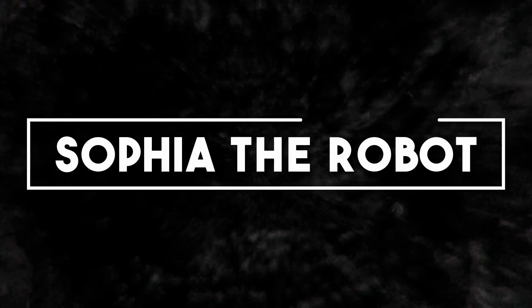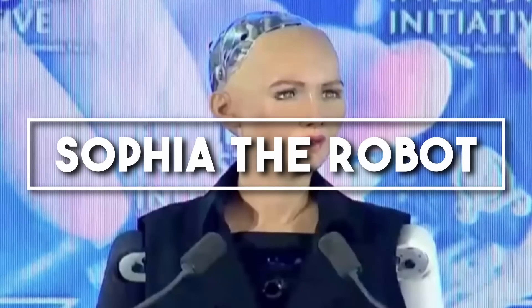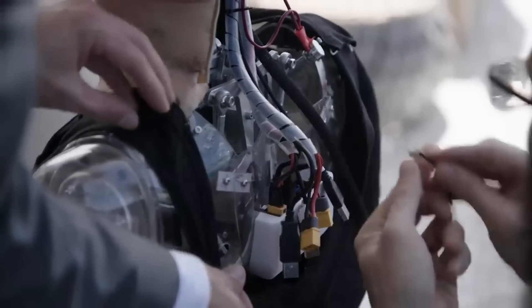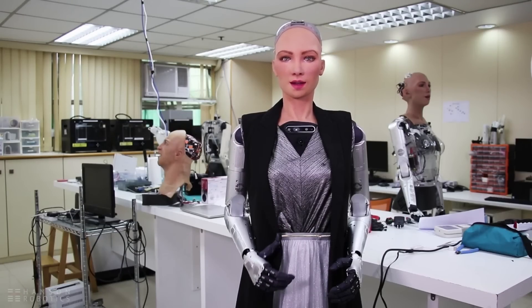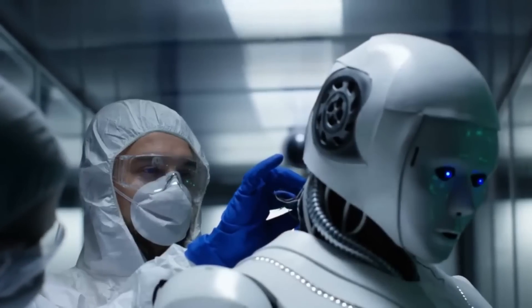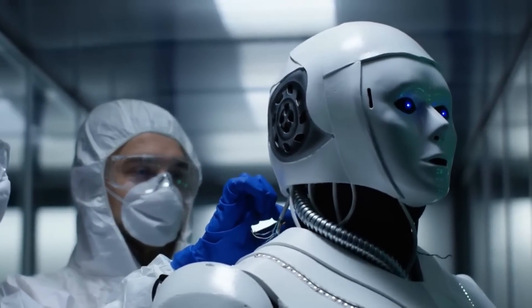Number 9. SOFIA the Robot. SOFIA, a humanoid robot by Hansen Robotics, activated in 2016, represents a significant leap in the field of robotics and artificial intelligence. It is recognized for its human-like appearance and behavior, a testament to the advancements in AI and robotics.